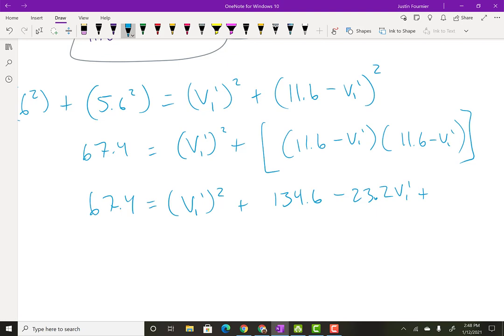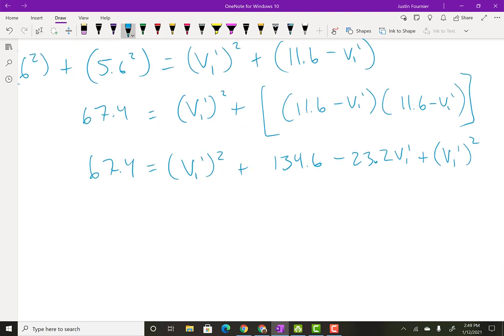And I'm going to take this relationship and plug it in here. So this is now using equation two. I got V1 is six squared plus V2 is 5.6 squared equals V1 prime squared plus, and then now instead of V2 prime, I'm going to have 11.6 minus V1 prime squared. So this is going to be 36 plus 5.6 squared. That gives me 67.4 equals V1 prime squared plus,